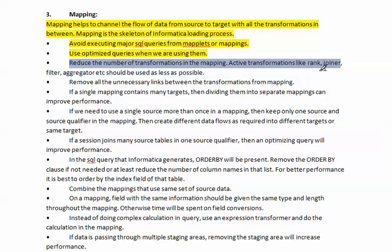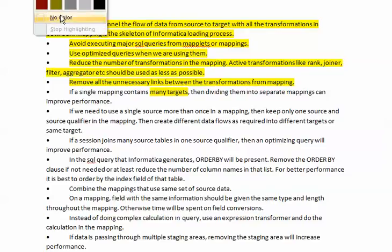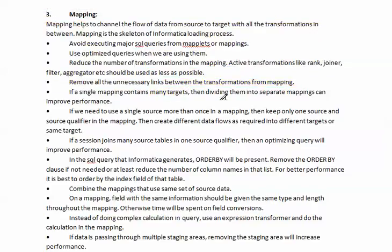Active transformations like rank, joiner, filter, and aggregator should be used as minimally as possible because they take a lot of time. Remove all unnecessary links between transformations in the mapping. If a single mapping contains many targets, dividing them into separate mappings can improve performance. If there are multiple targets in the same mapping and you can separate them into another mapping, it will be very helpful to improve performance.